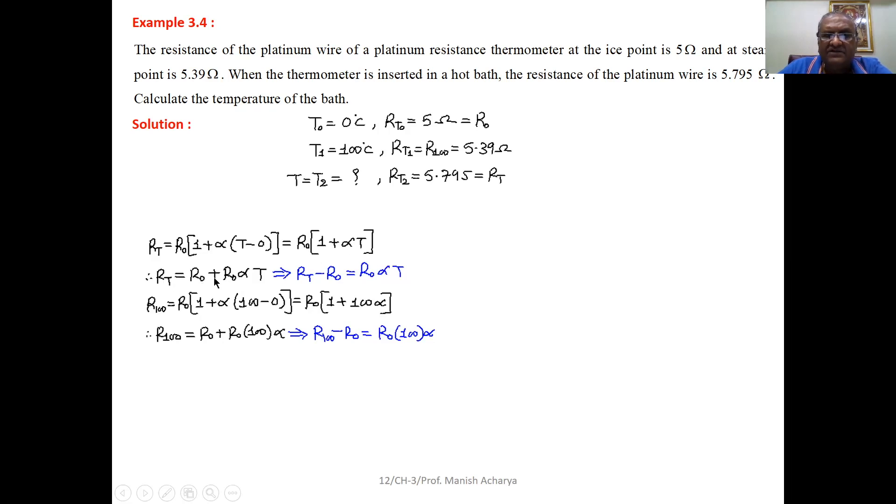So RT equal to R0 plus R0 alpha T. Take this R0 on left hand side, so we will get RT minus R0 equal to R0 alpha T.